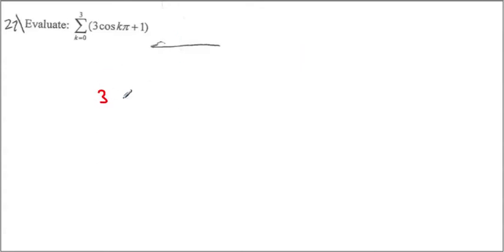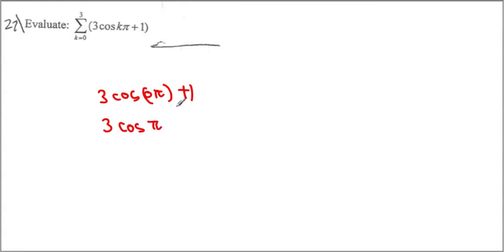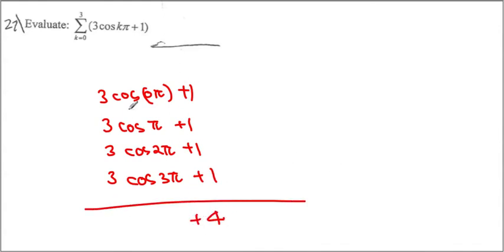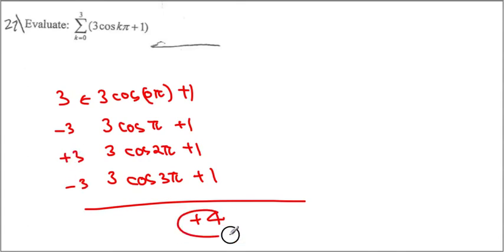Here we have 3cos(0π) + 1, then 3cos(π) + 1, then 3cos(2π) + 1, then 3cos(3π) + 1. If you add up all the plus 1s, that becomes 4. cos(0π) gives 1, so that's plus 3. cos(π) gives negative 1, so that becomes negative 3. It becomes positive 3, then negative 3. All the 3s cancel out, so the only thing left is 4.